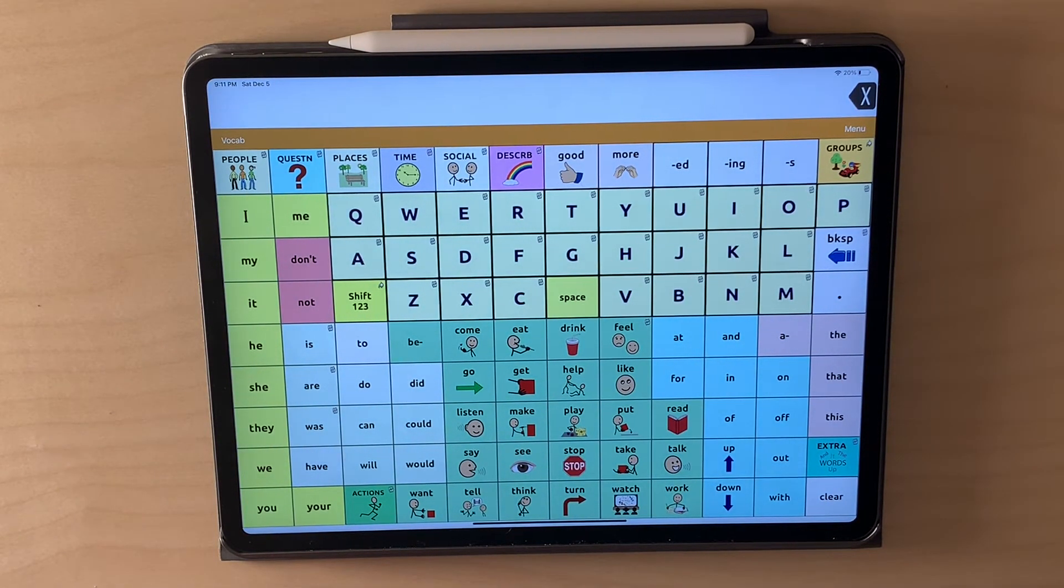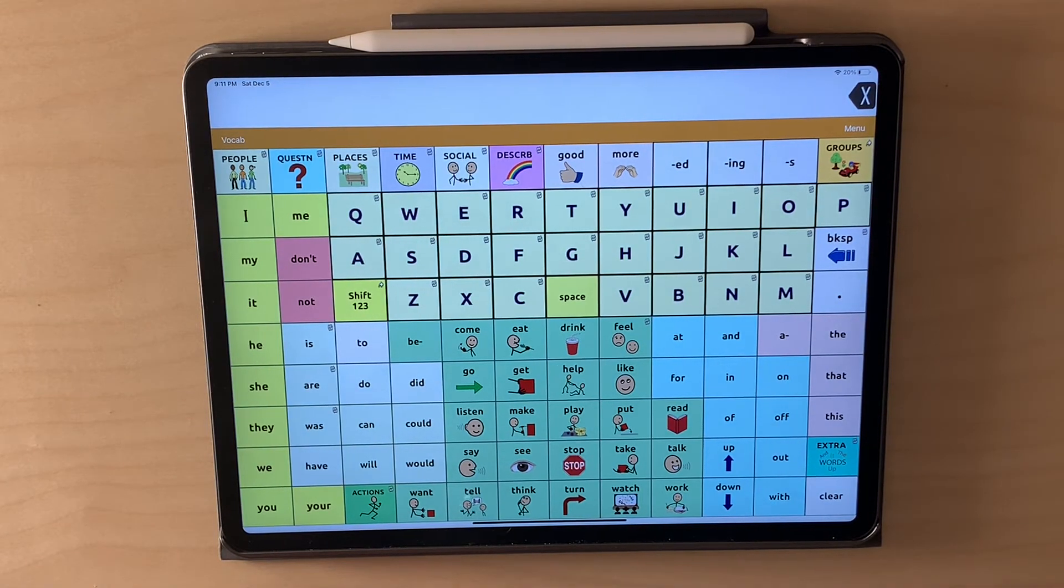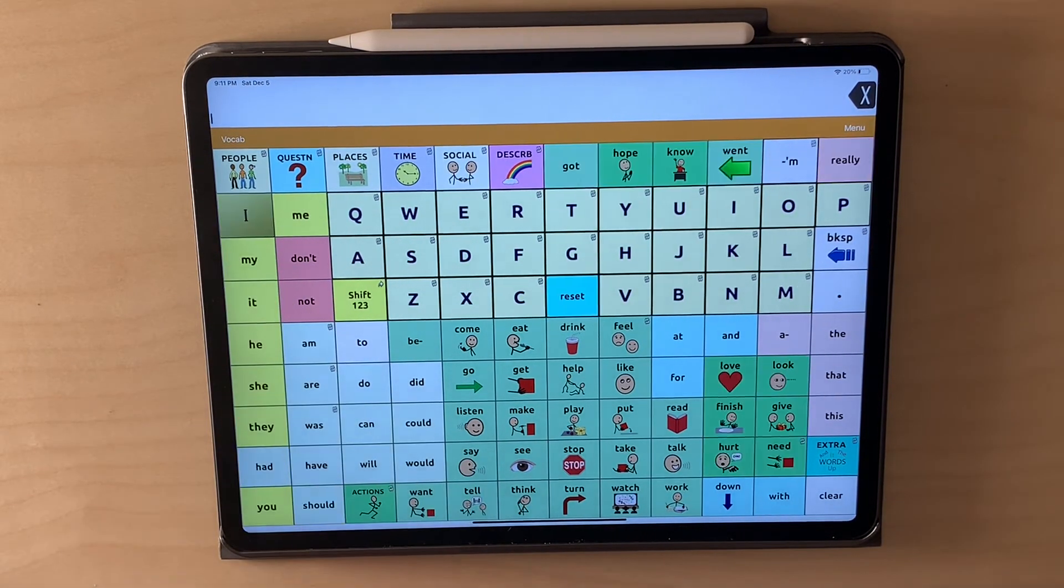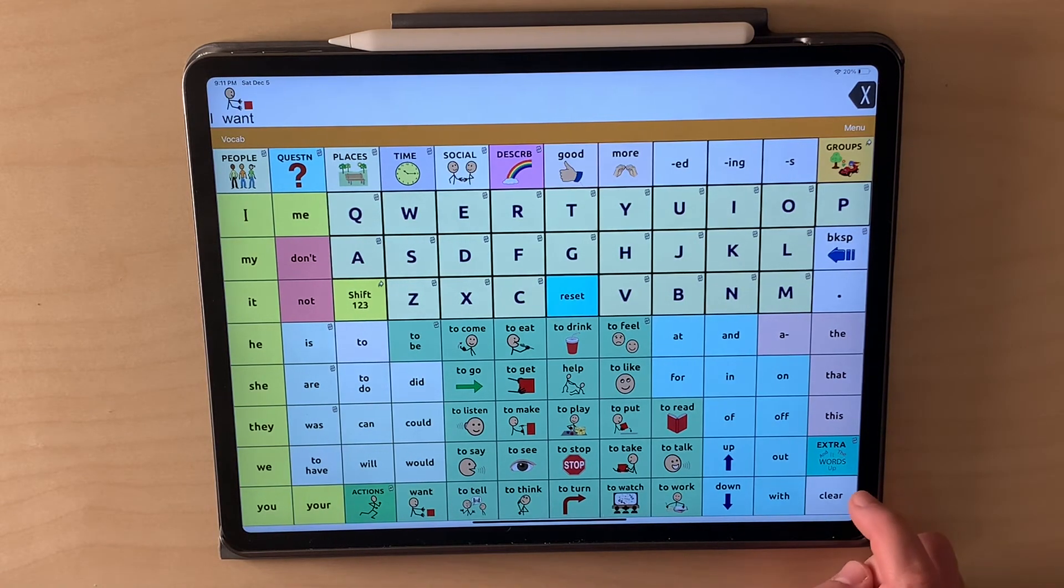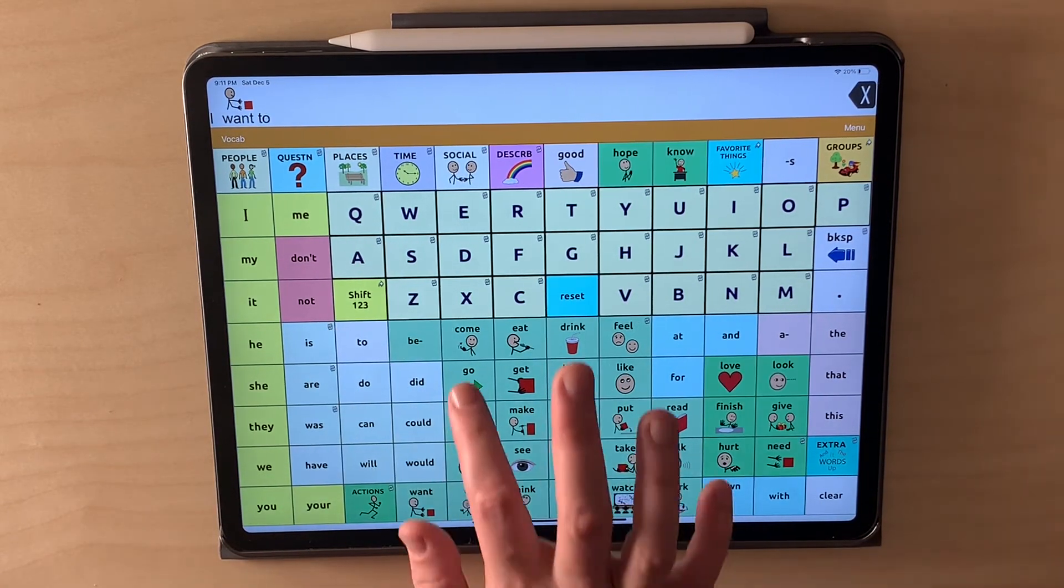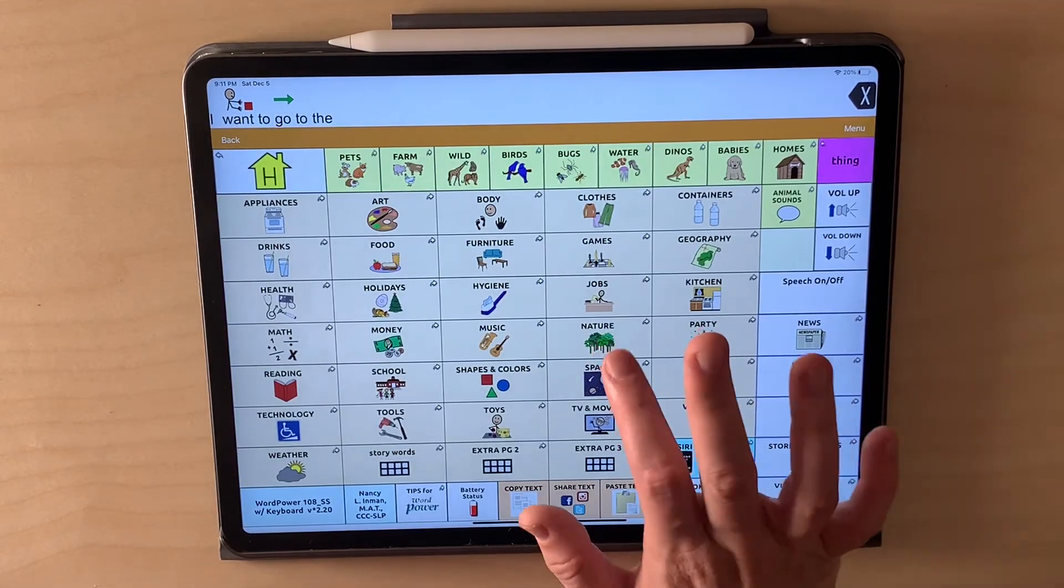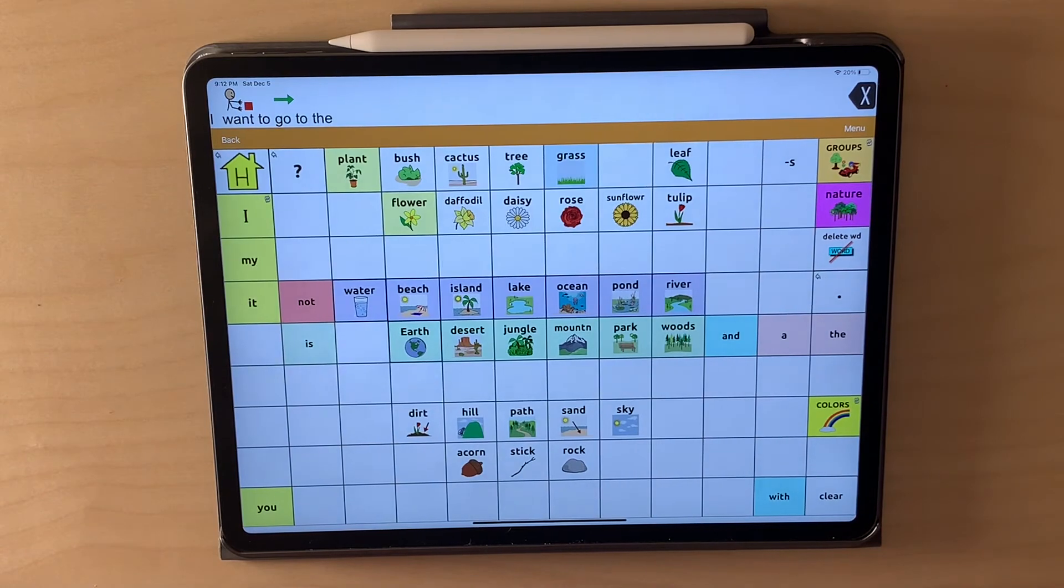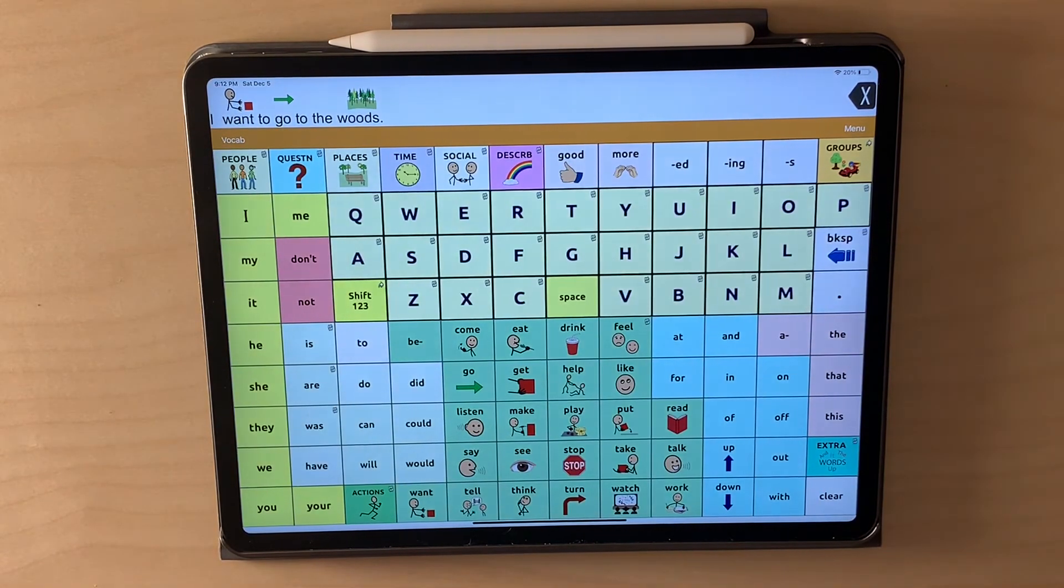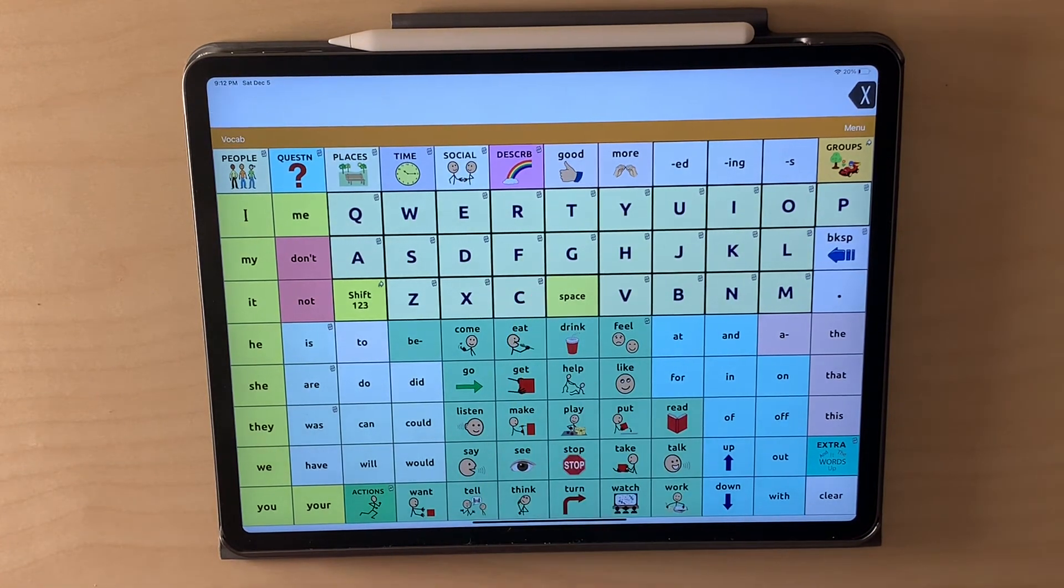Swipe down. Maybe I want to talk about something that I want to do. I want to go to the. And I want to say place. Maybe it's in nature. I want to go to the woods.